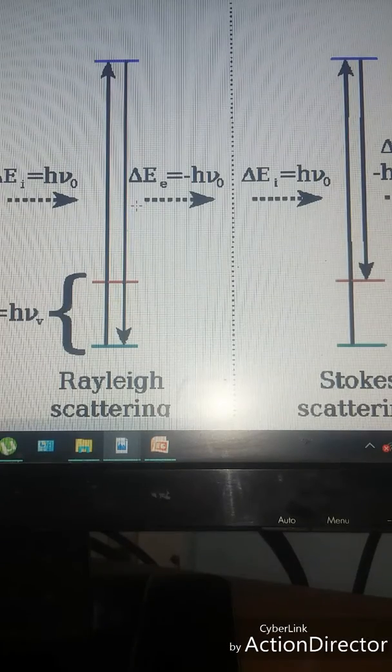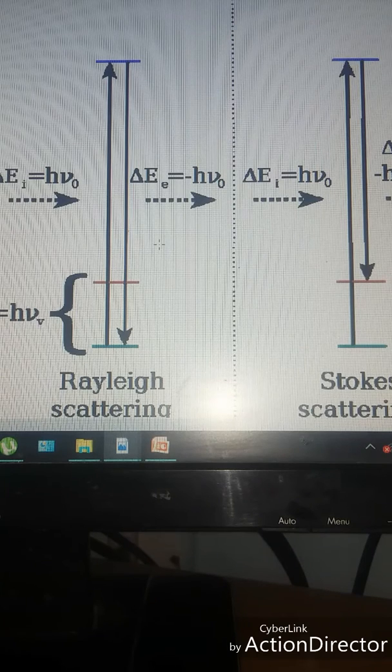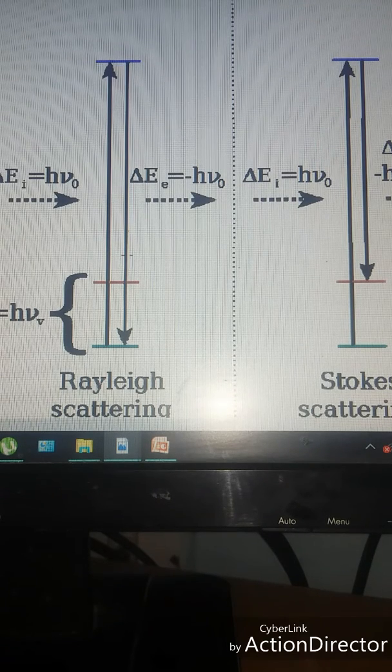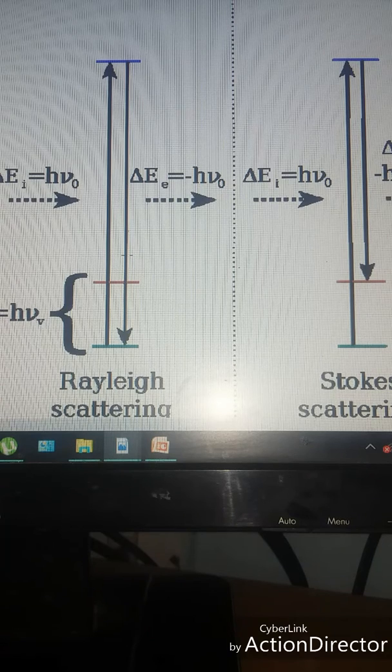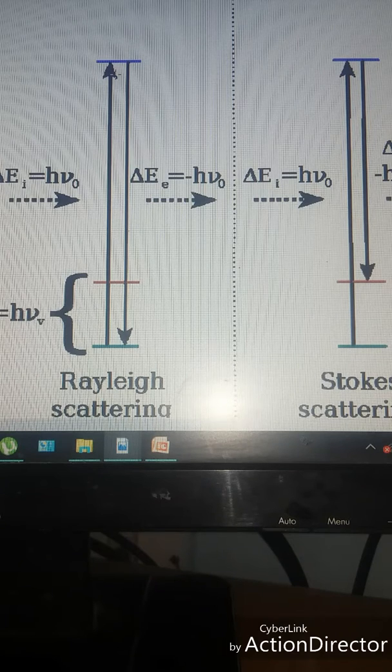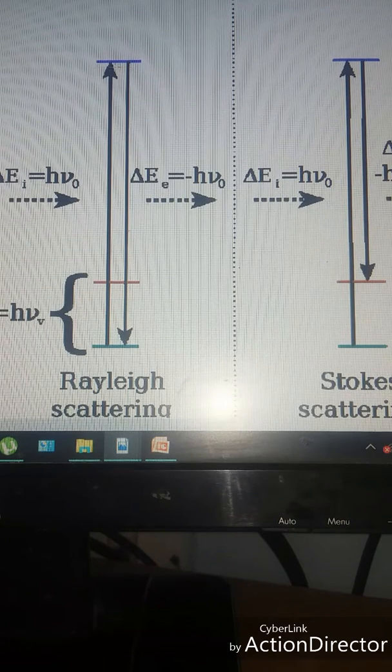Now let us talk about the scattering process. In this, a beam of monochromatic light falls on a molecule and photons will be absorbed by the material and scattered. The vast majority of these scattered photons have exactly the same wavelength as the incident photon, and they are known as Rayleigh scattering because this is the virtual level.